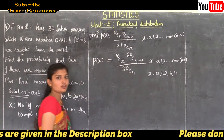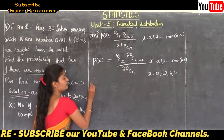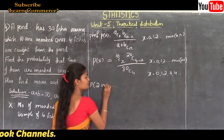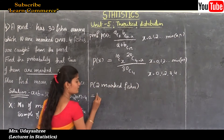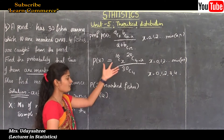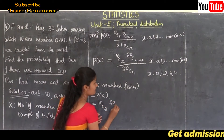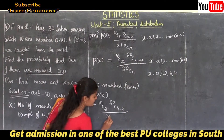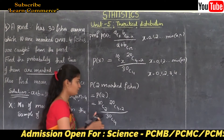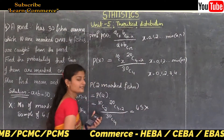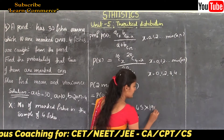Based on the question, we need to calculate the probability that two of them are marked — that is, P of x equals 2. Substituting into the formula: P(2) equals 10 C 2 times 20 C (4 minus 2), divided by 30 C 4. Now 10 C 2 is 45, and 4 minus 2 is 2, so we need 20 C 2.